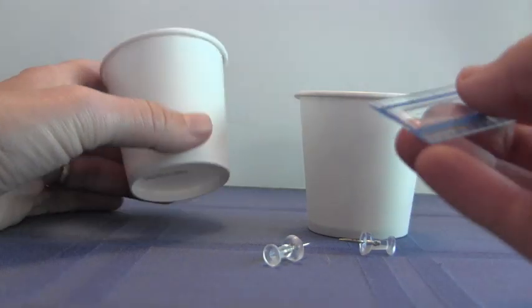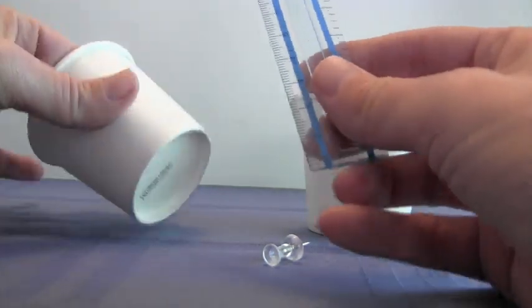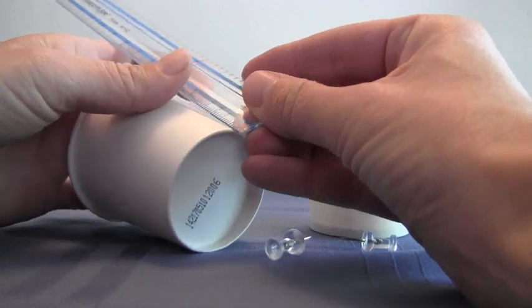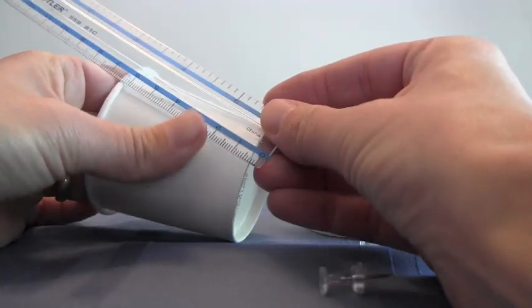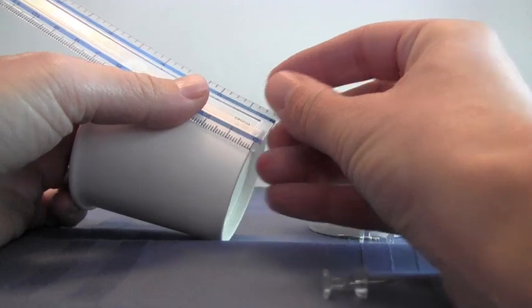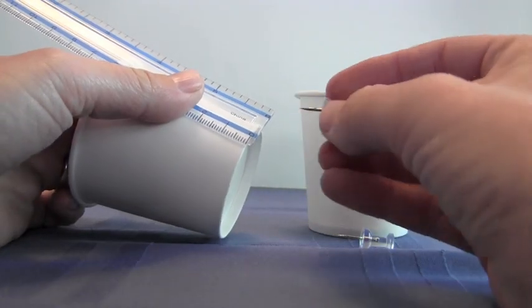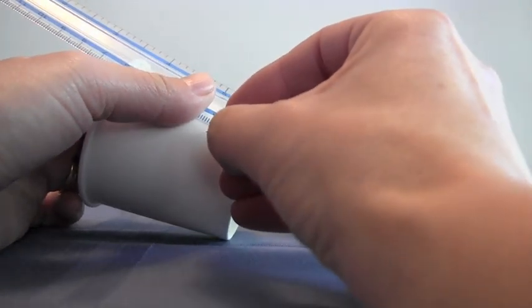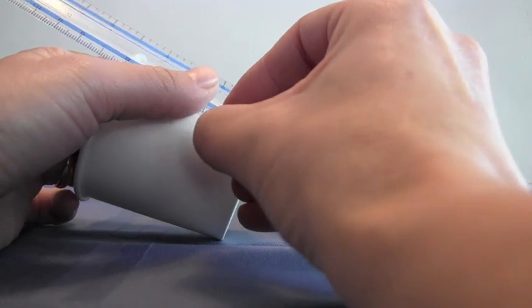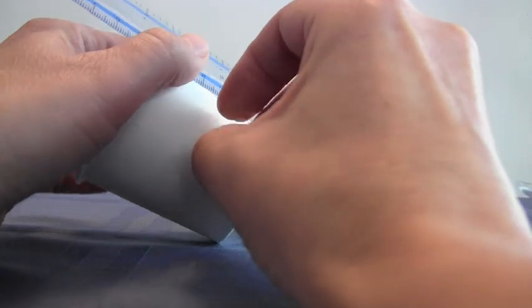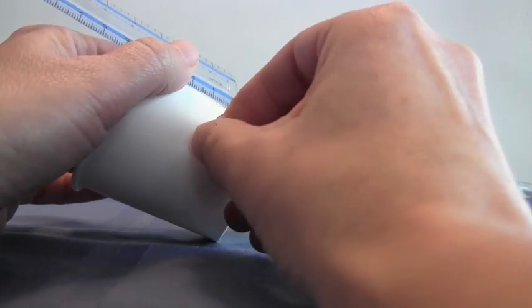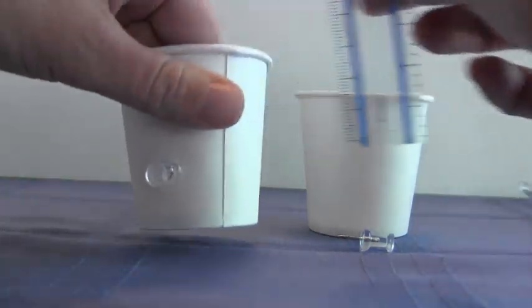I'm going to measure about three quarters of an inch, or let's call it two centimeters from the bottom of my cup. And I'm going to poke a pushpin through. I like to hold the pin and then I have my finger nearby in the back, but not near enough that it's going to get poked. And there it is.